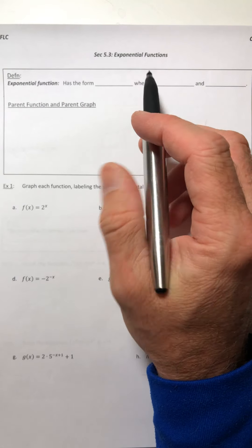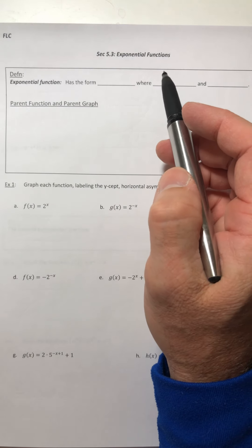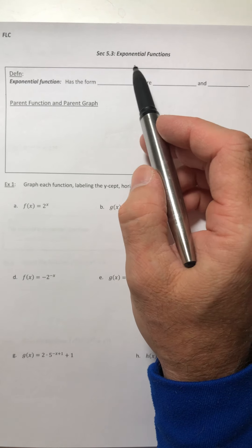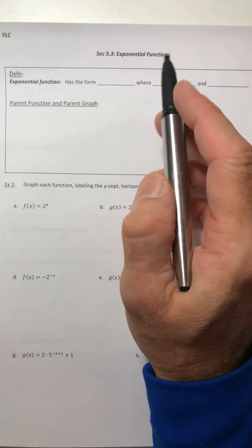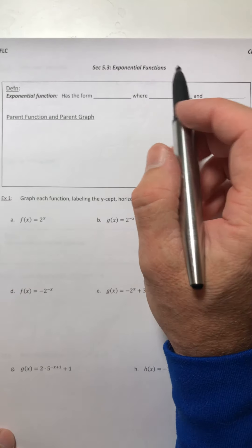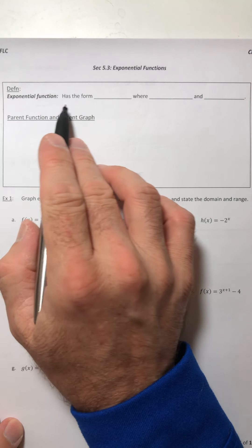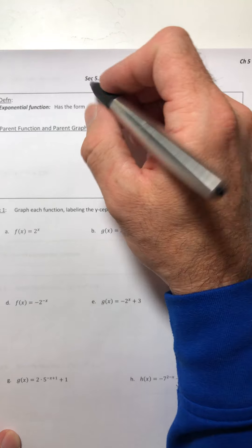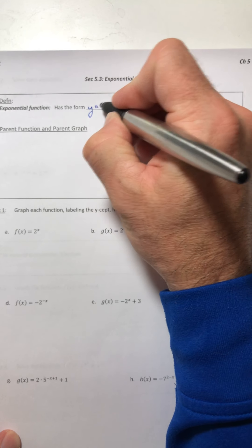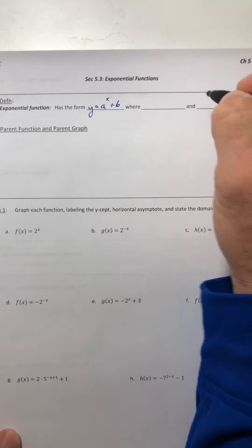Welcome back mathletes, we are getting into things that I think are pretty cool. So Section 5.3, exponential functions. These things are pretty interesting, so let's see what it is. An exponential function has the form y equals a to the x plus b.